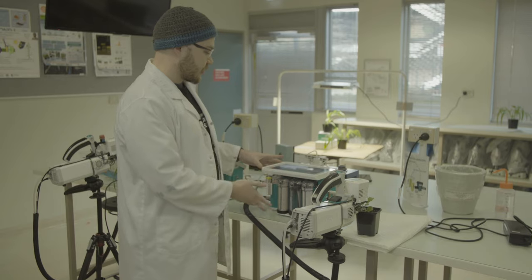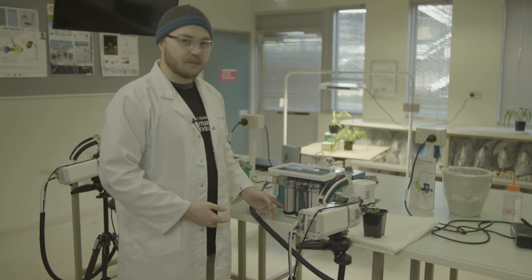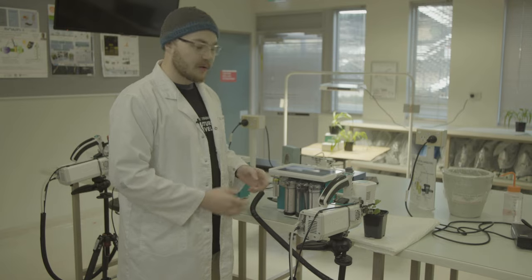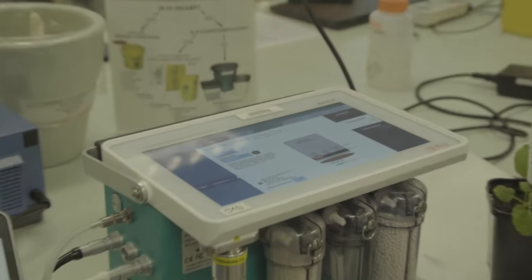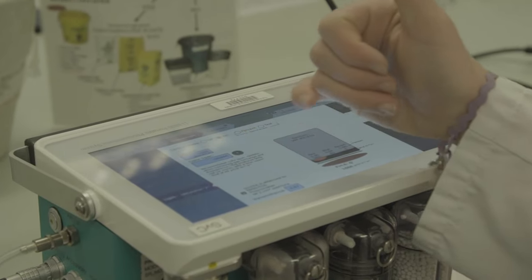So this apparatus here, what it does is it first scrubs out water from the air. That way we can start with no water. Then this here will then add in a known amount of water, whether you want 40% water in the air or you want 80% water in the air.